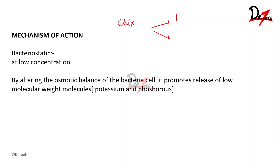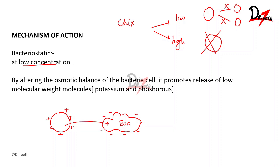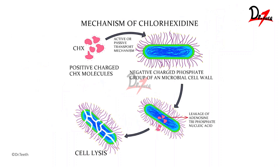Regarding the mechanism of action, chlorhexidine has two types of action. At low concentration it acts as a bacteriostatic agent, preventing replication of bacteria. At high concentration it acts as a bactericidal agent, killing bacteria by lysis. At low concentration, being a positively charged molecule, chlorhexidine is attracted to negatively charged bacteria, enters the cell, causes osmotic imbalance, and promotes release of potassium and phosphates. Loss of these low molecular weight substances prevents the bacteria from replicating or multiplying.